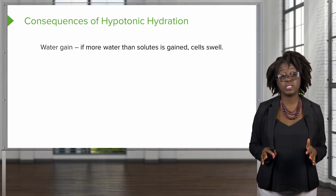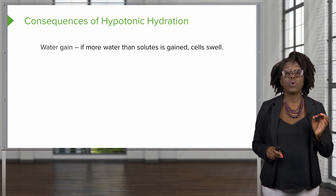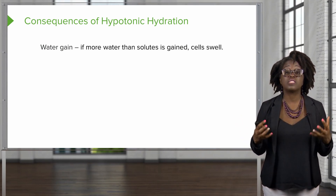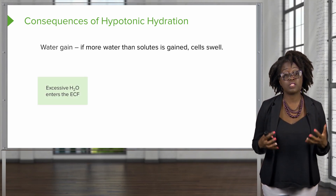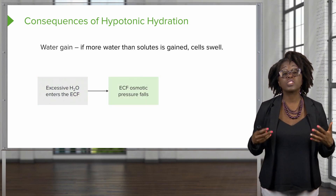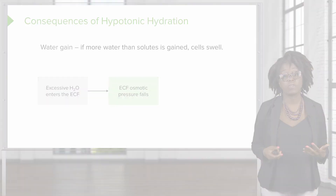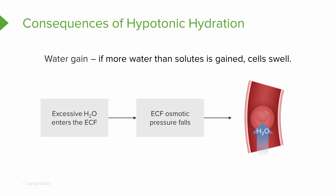The consequences of hypotonic hydration include water and solutes moving into the cells, causing them to swell. This is due to excessive water entering the extracellular fluid compartment, which causes the osmotic pressure of the extracellular fluid to fall. Because of this pressure change, water moves into the cells by osmosis, leading to swelling of the cells.